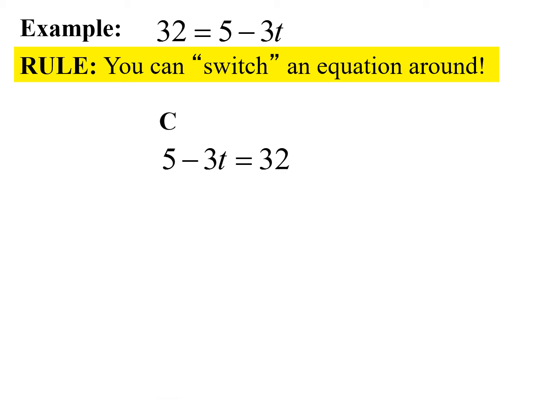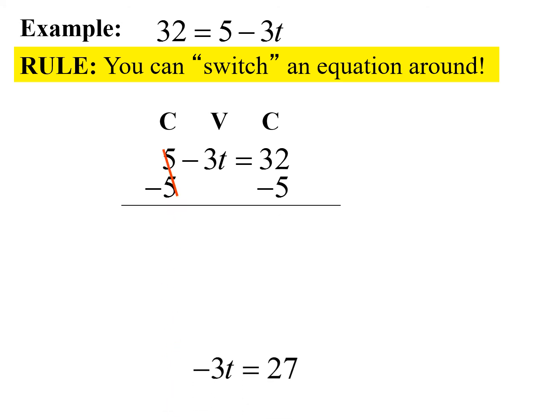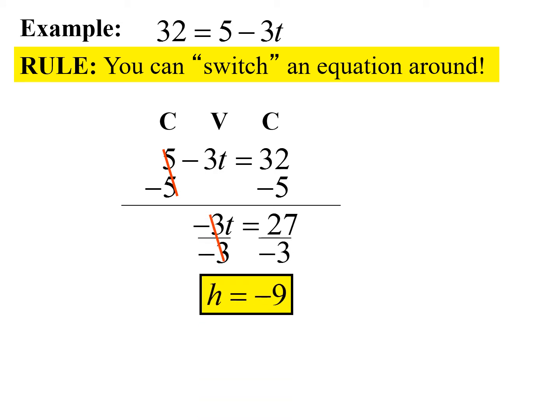Now I want to solve. The 5 is a positive constant, negative 3t is the variable term, and 32 is a constant. To move my constants to the same side, I do the opposite of positive 5 — subtract 5 from both sides — giving negative 3t equals 27 on the left. Then I divide both sides by negative 3, and I get t is equal to negative 9.